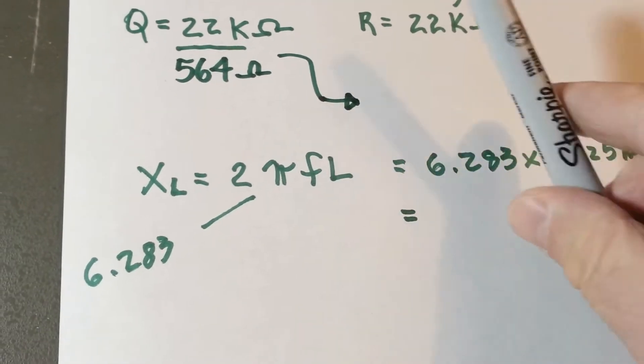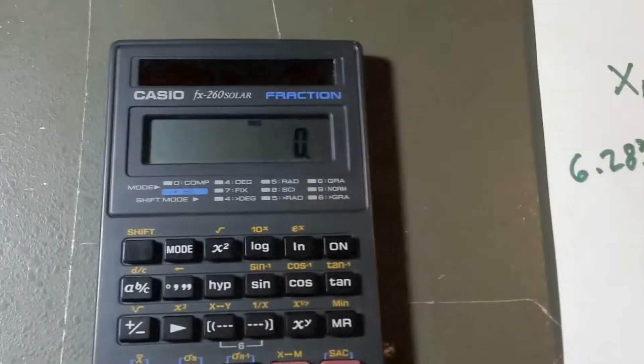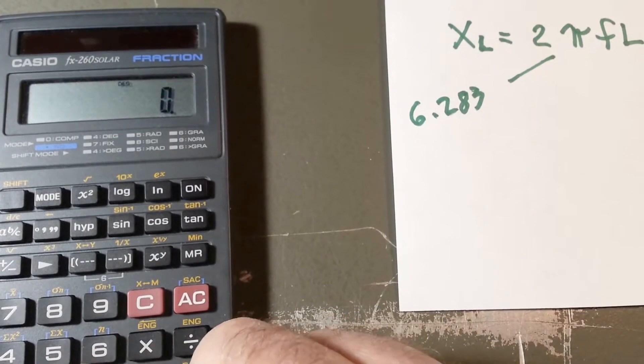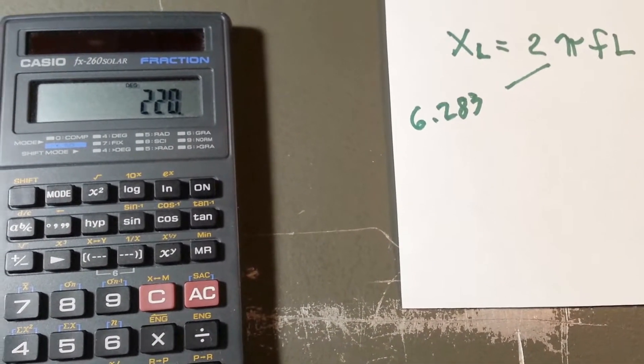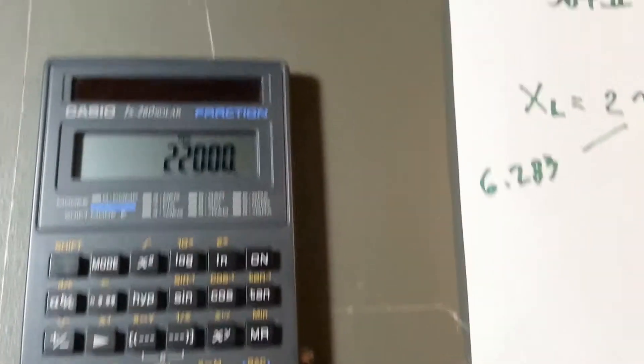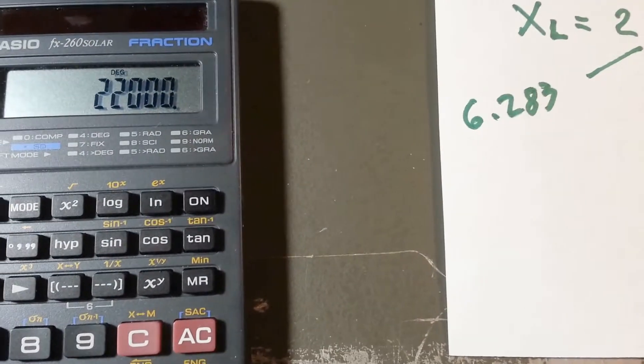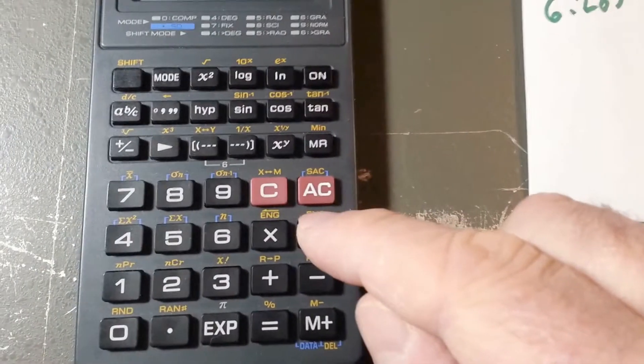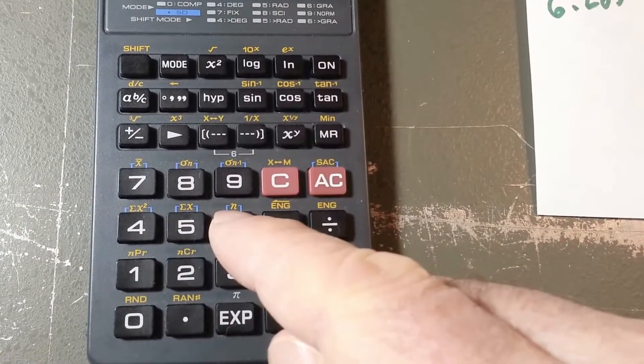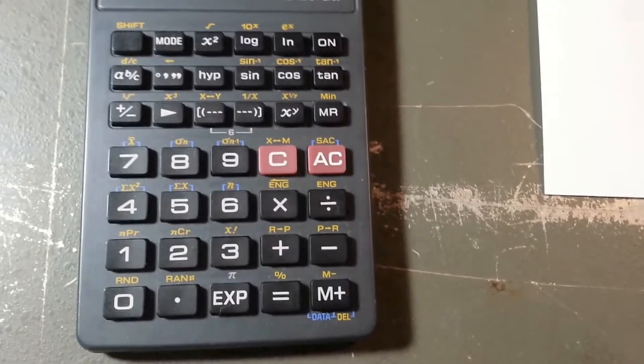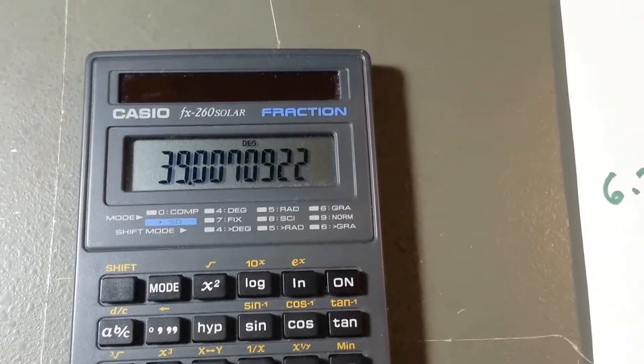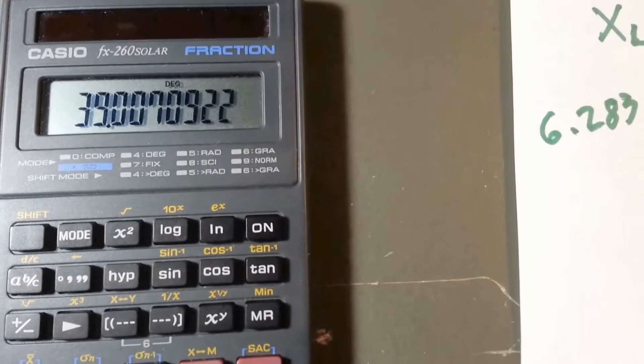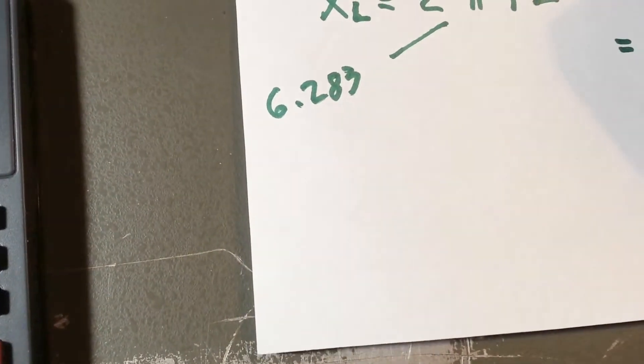And we'll divide that now, just clear that, I know I could leave it on there, but it's easier to clear it, so 22,000 divided by 564.4 ohms equals, and the Q looks like 39. So, that's equal to 39.